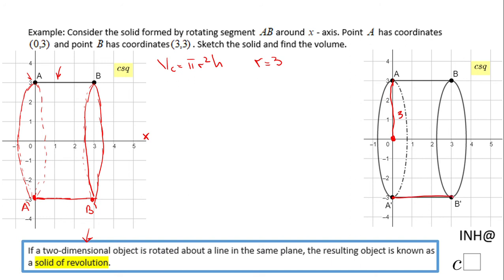So the volume of this object will be π times 3² times 3, which is π times 9 times 3.